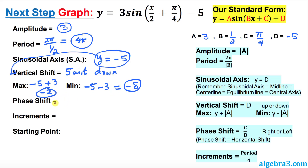We will do phase shift in a moment. First, let's take care of the increment. The increment is simply the period divided by 4. Our period is 4 pi, so dividing by 4 gives us pi. That is going to be our increment.